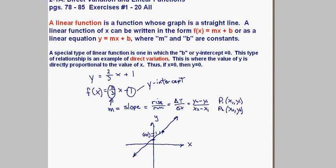Now, this line, even though it is a linear function, this relationship is not direct variation. And the reason it's not direct variation is because our y-intercept is not 0.